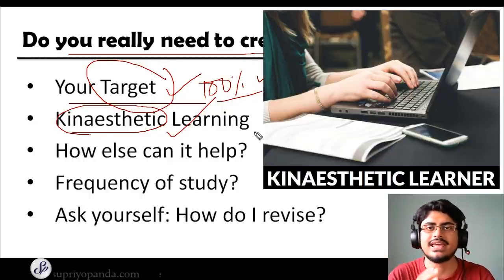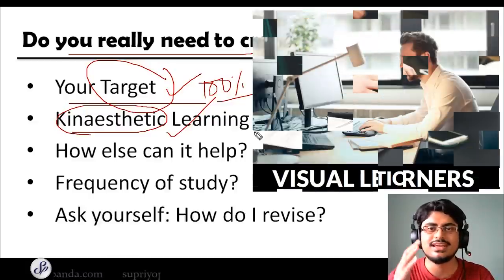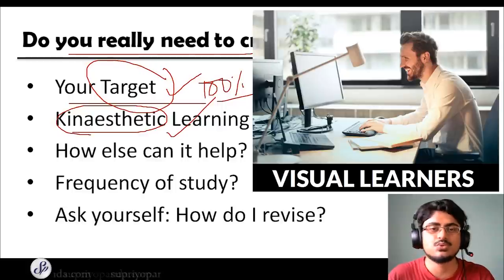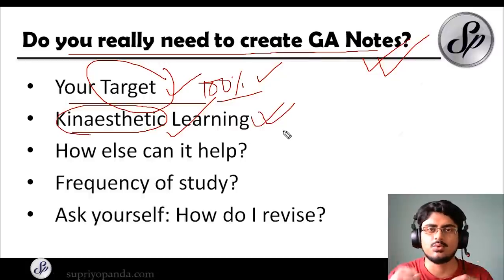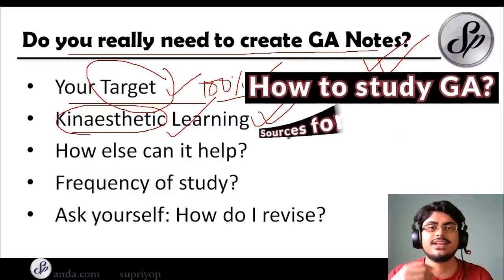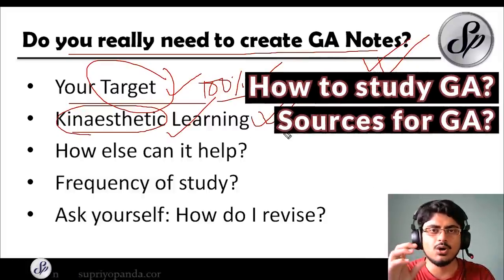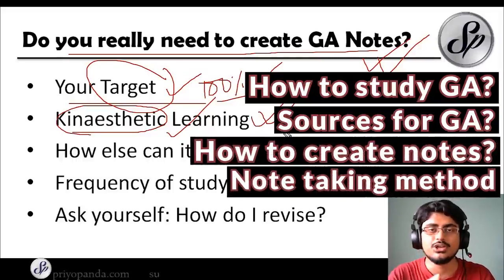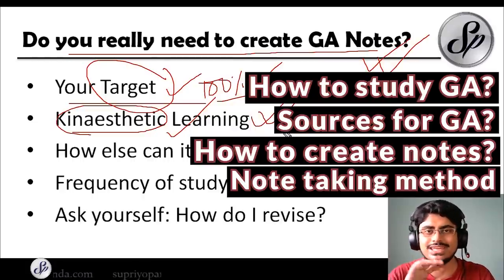I am a kinesthetic learner — I have to write, otherwise it's quite difficult for me to memorize. My brother, however, is not, so he can just look at something and remember. If you are a kinesthetic learner like me, you need to make your General Awareness notes. In this session, I will tell you how to study, the various sources you need, how to create your notes, and whether to use paper-based or digital methods.